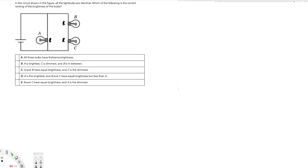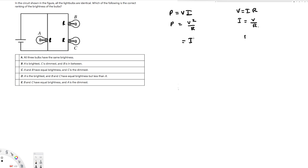Brightness represents power. When we talk about power, we have several equations: P equals VI, and we know that V equals IR. So if I replace V with IR, I can write P equals I²R. Or if I replace I with V over R, I can write P equals V² over R. There are many different ways we can write this.